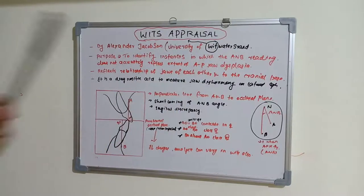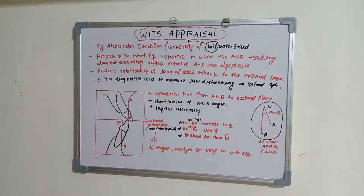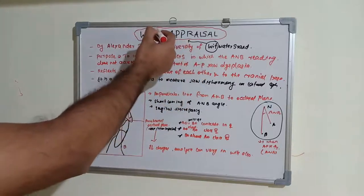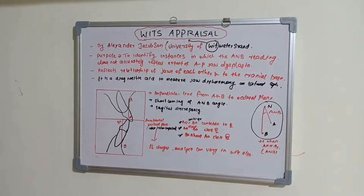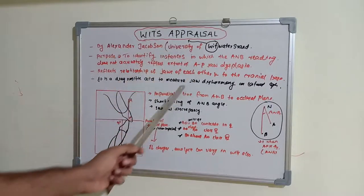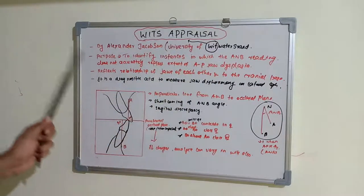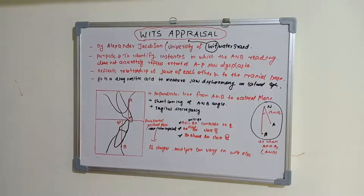Alexander Jacobson was working at the University of Witwatersrand, and that is why this analysis carries that university's name — Wits appraisal. The basic purpose is to identify instances in which the ANB reading does not accurately reflect the extent of an anterior-posterior jaw dysplasia in the sagittal plane.